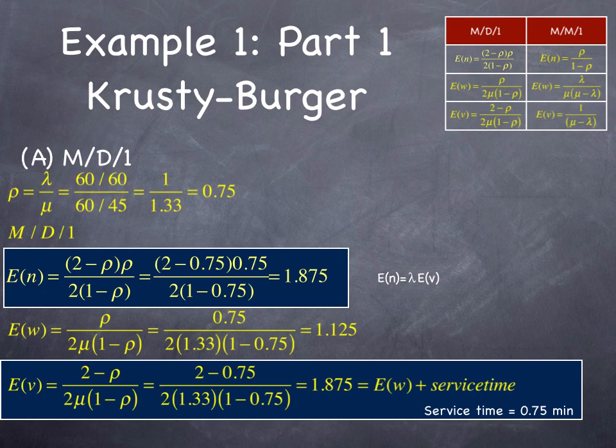Rho equals lambda over mu, and is 1 over 1.33, or 0.75, so that's capacity utilization. So far, so good.